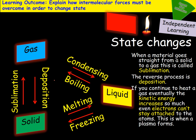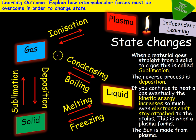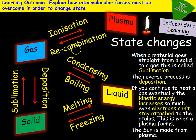Just as an extra point, if I keep heating up a gas, we can increase the kinetic energy so much that even the electrons don't stay attached and we then have a plasma. Because the electrons are no longer attached, that's called ionization. And obviously reattaching electrons is called recombination.